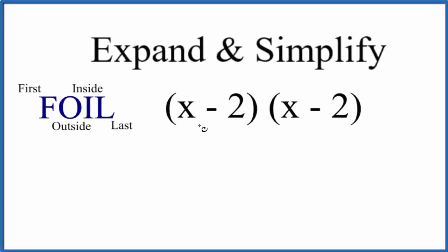Let's expand and simplify x minus 2 times x minus 2. We use the distributive property to do that. One way to remember this is with the FOIL method.